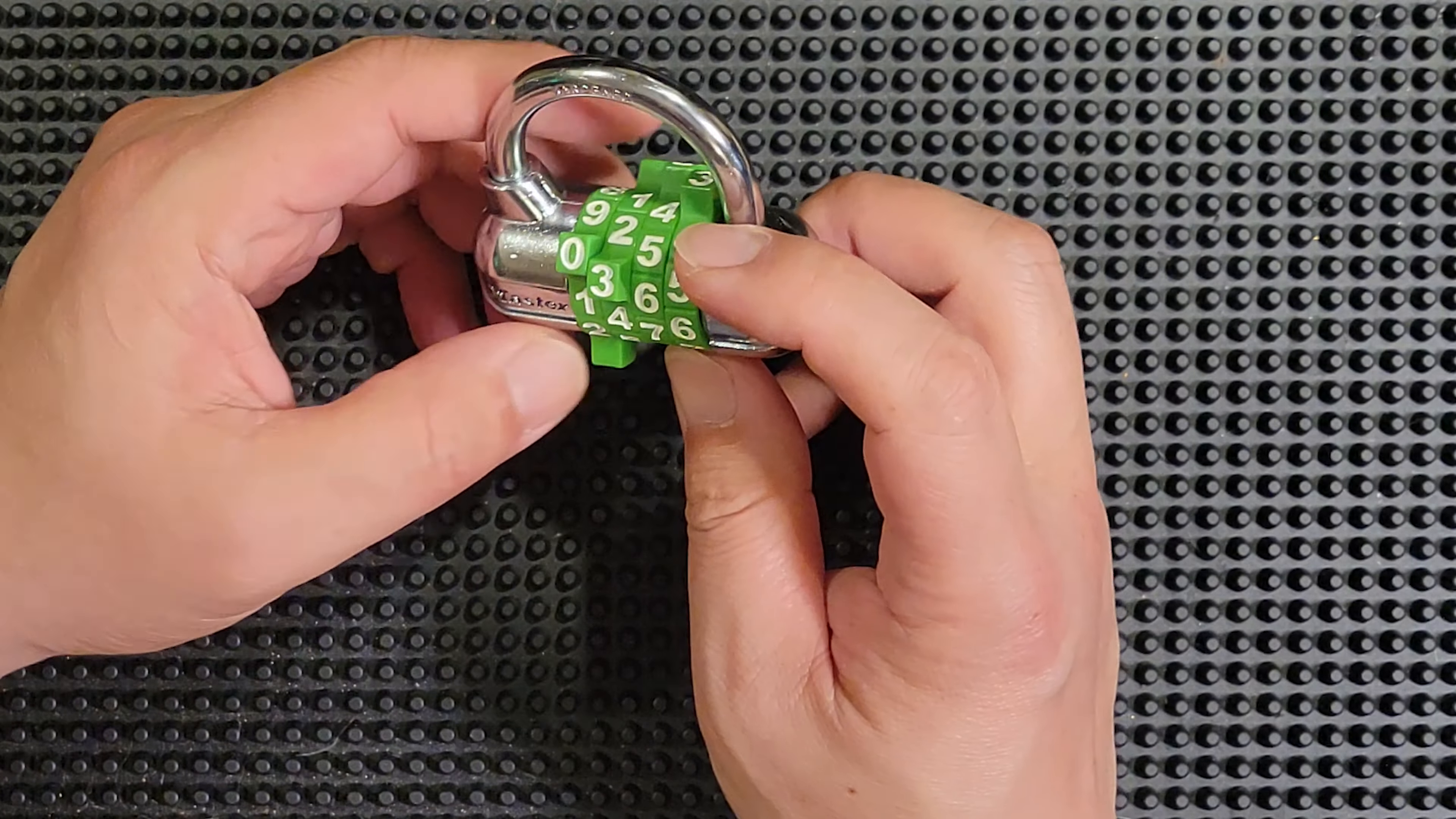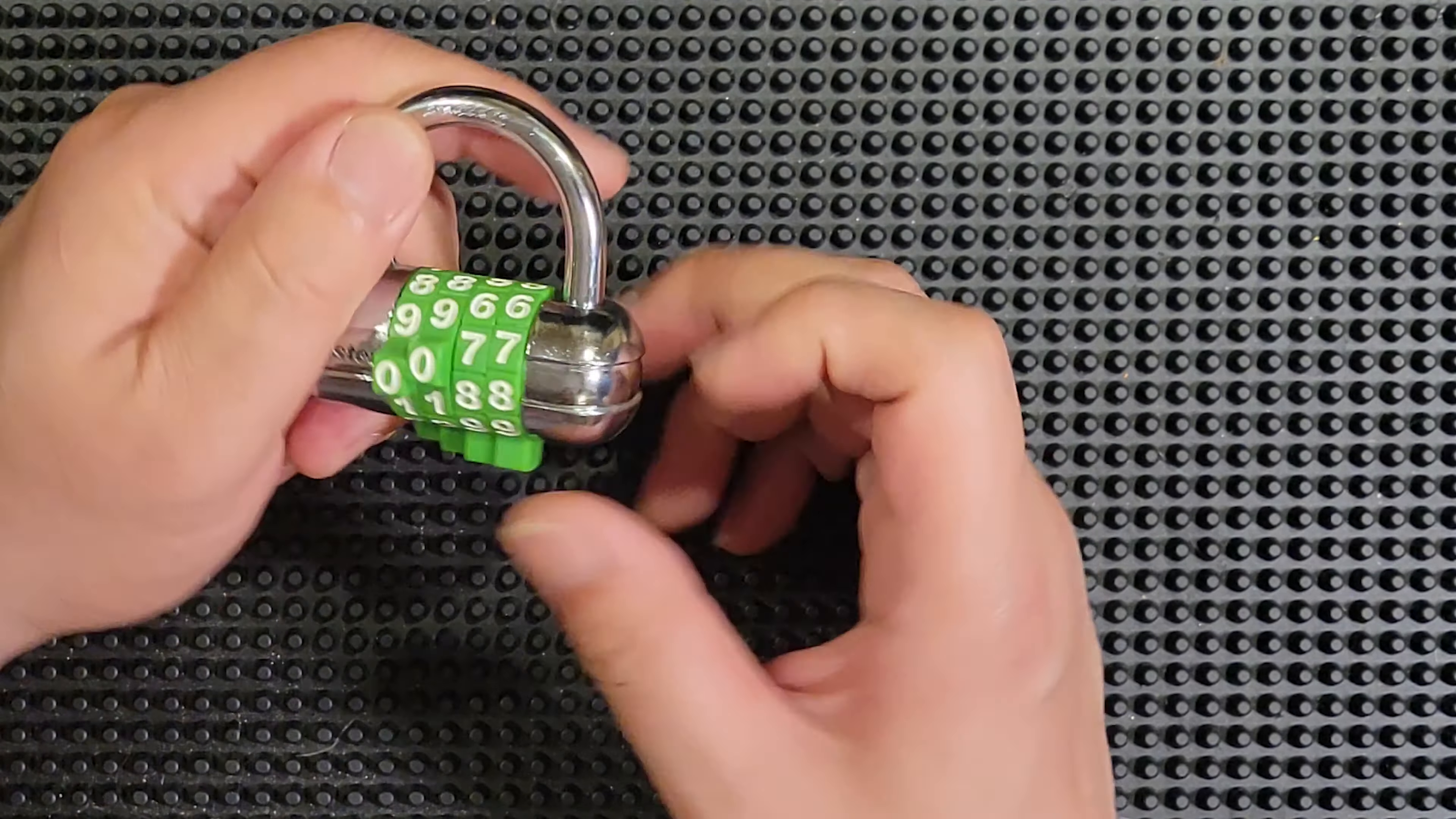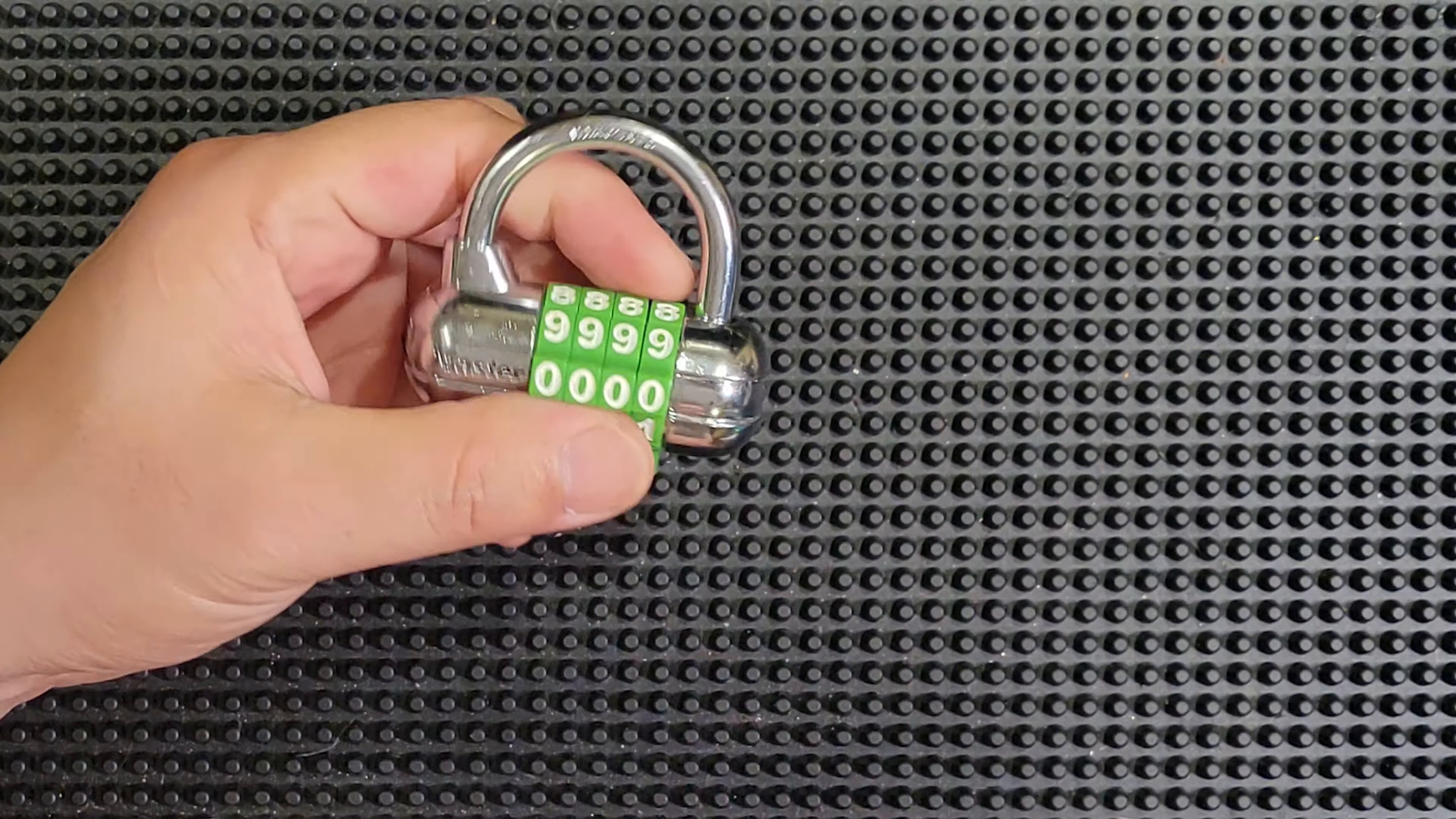And give the dials a good scramble. Okay. So, now we have a random combination set. And I'm going to set this to all zeros to start with. And this should not be our combination. It is not.